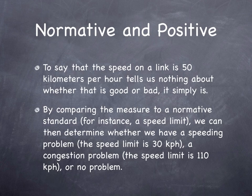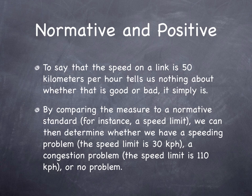You also need to think about standards. When we say the speed on a link is 50 kilometers per hour, is that good or bad? That depends on the link. 50 kilometers per hour is too fast on a neighborhood street in front of an elementary school, but too slow on an interstate highway. Whether it is good or bad depends on context, and the measure of effectiveness should consider that as well.